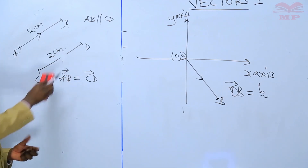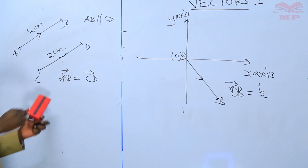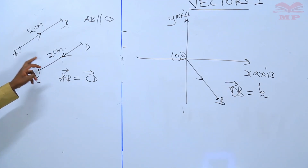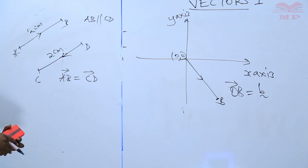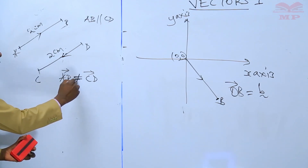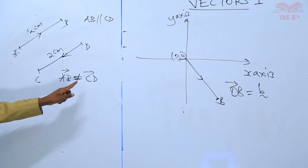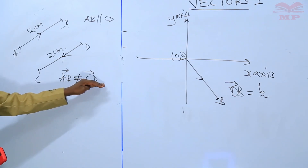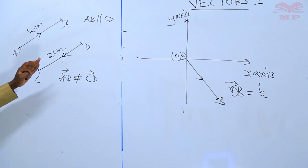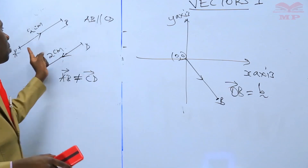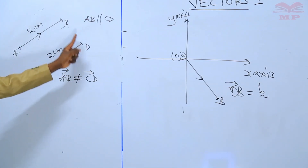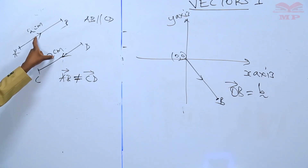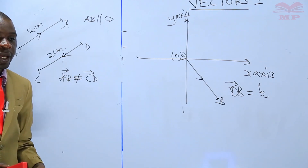Now if we take the same example but the direction of CD is the opposite, we would say that vector AB is not equivalent to CD. The reason is AB has a length of two centimeters but moves in an opposite direction compared to CD, so because the directions are not similar, the two vectors are not equal.